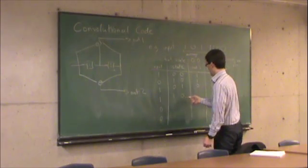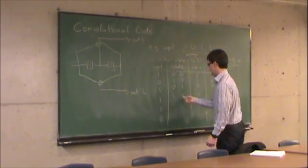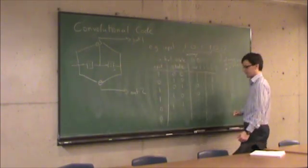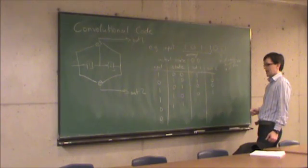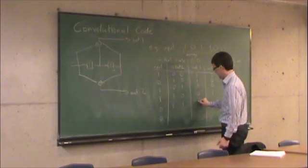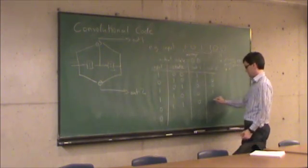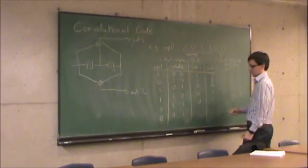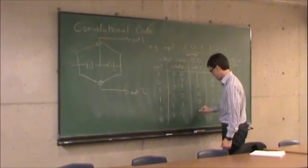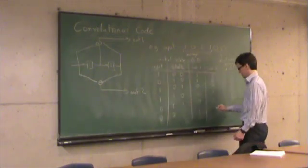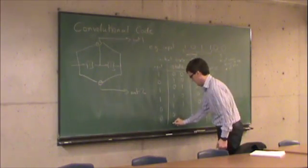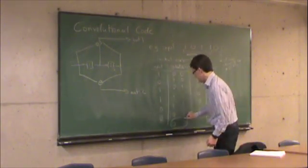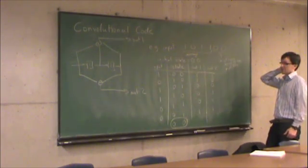All three of these added together mod two is 0. This plus this mod two is 1. Next state is 1, 1. All three of these added together mod two is 0. This plus this mod two is 1. Next state is 0, 1. All three of these added together mod two is 1. This plus this mod two is 1. And my final state is 0, 0. So we ended in the all-zero state after all of the inputs were received.